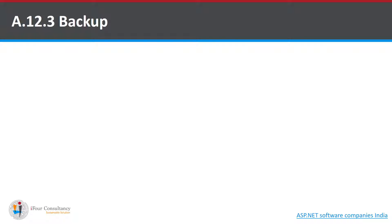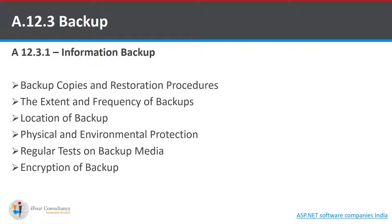Now let's look at the controls under Backup. It states that backup copies of information, software, and system images shall be taken and tested regularly in accordance with an agreed backup policy. The following things can be agreed upon in this policy: 1. How many backup copies must be produced? 2. What is the restoration process? 3. What is the extent and frequency of the backups needed? 4. What should be the location of the backup? 5. How much physical and environmental protection is needed for the backup? 6. At what intervals and how many regular tests are required on backup media? 7. Is there a need to encrypt the backup data?